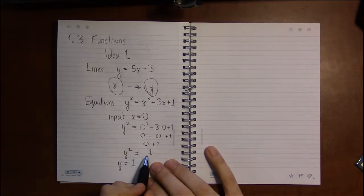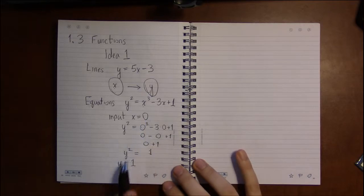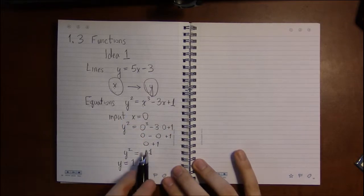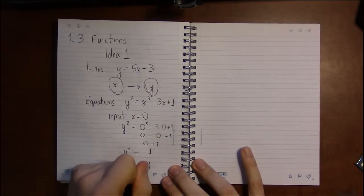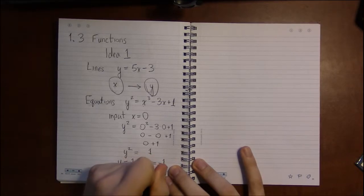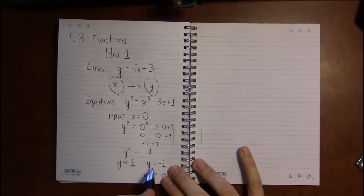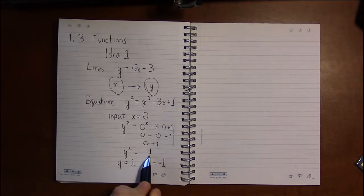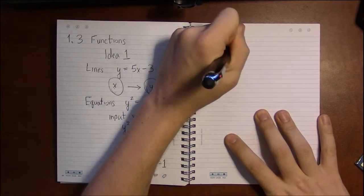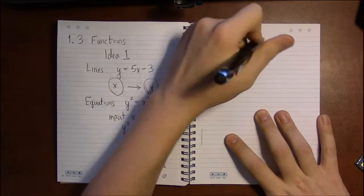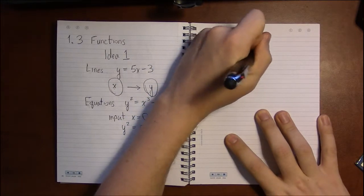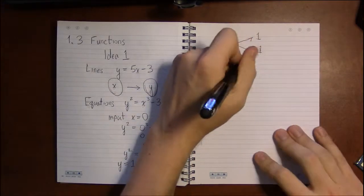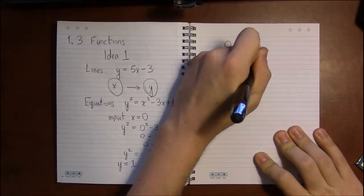And if that's all there was, then I can't dismiss this as a function. The problem is y could also be minus one. Minus one squared is still one, so the x value of zero maps to two different y values—it maps to one and minus one. So this is not a function.